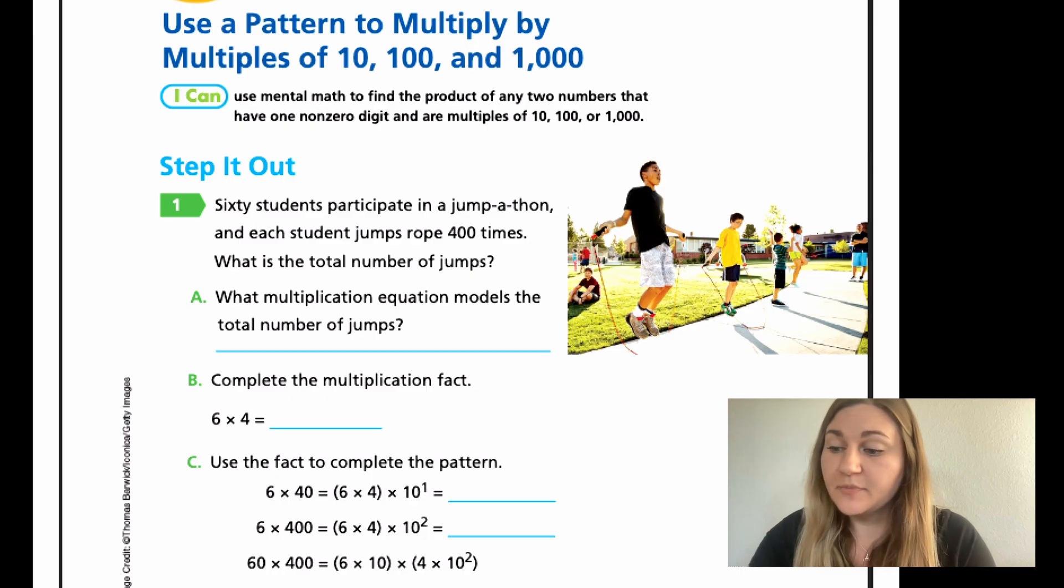60 students participate in a jump-a-thon, and each student jump ropes 400 times. What is the total number of jumps? We have students, probably at school, jumping rope. Got it.